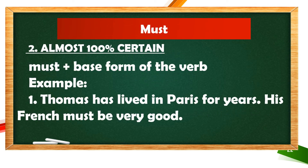We use the modal 'must' if we are 100% certain of a certain thing. For example: 'Thomas has lived in Paris for years. His French must be very good.' Here, you are 100% sure that Thomas is good in French because he has lived in Paris for years.